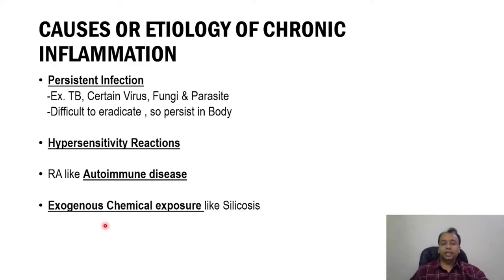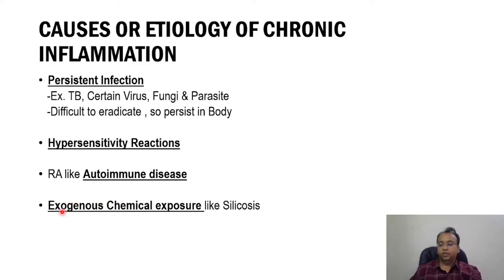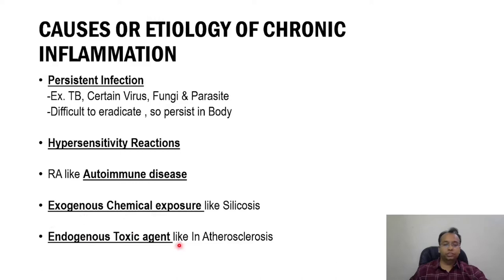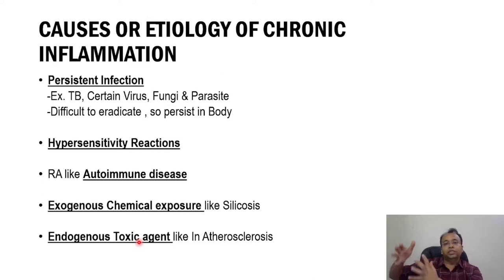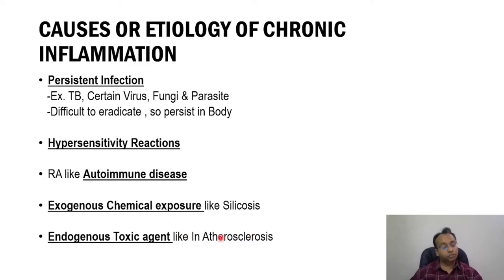Another example is exogenous chemical exposure, like silica exposure or asbestos exposure — silicosis. So occupational lung disease comes under the category of chronic inflammation. And endogenous toxic agents — for example, if a patient has hypertension, hyperhomocysteinemia, or high lipid levels — all that can lead to damage of the endothelium within blood vessels, initiating a response-to-injury hypothesis which ultimately leads to development of atherosclerosis. So atherosclerosis is also one example of chronic inflammation.